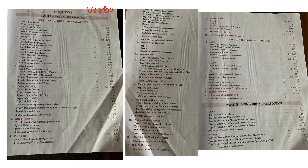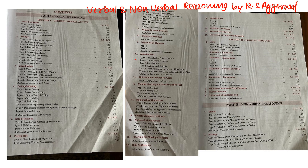The next book is Verbal and Non-Verbal Reasoning by R.S. Agarwal. You have to take this book. Both books are very big, but I will tell you the specific topics to cover. From RS Agarwal, you will cover: Series, Analogy, Classification (Odd One Out), and Coding-Decoding. You will also cover Blood Relations and Puzzle Test.